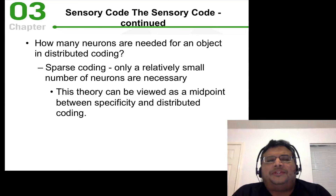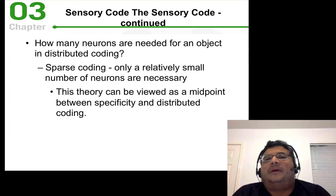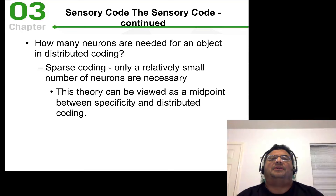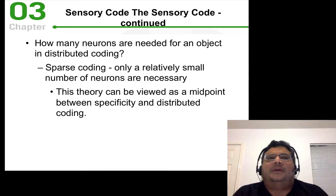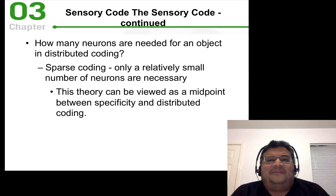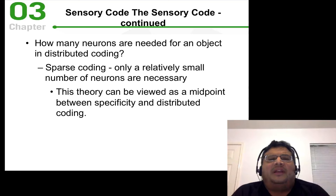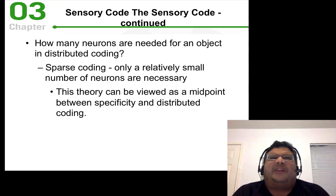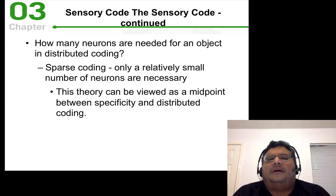One key question in understanding how sensory information is encoded is: how many neurons does it take in a distributed model? If we have all these neurons firing distributed across the brain to allow us to perceive objects, how many does it take? One idea is sparse coding — that only a small number of neurons are needed. From an evolutionary perspective, it makes sense that our brains use as few neurons as possible to encode an object.